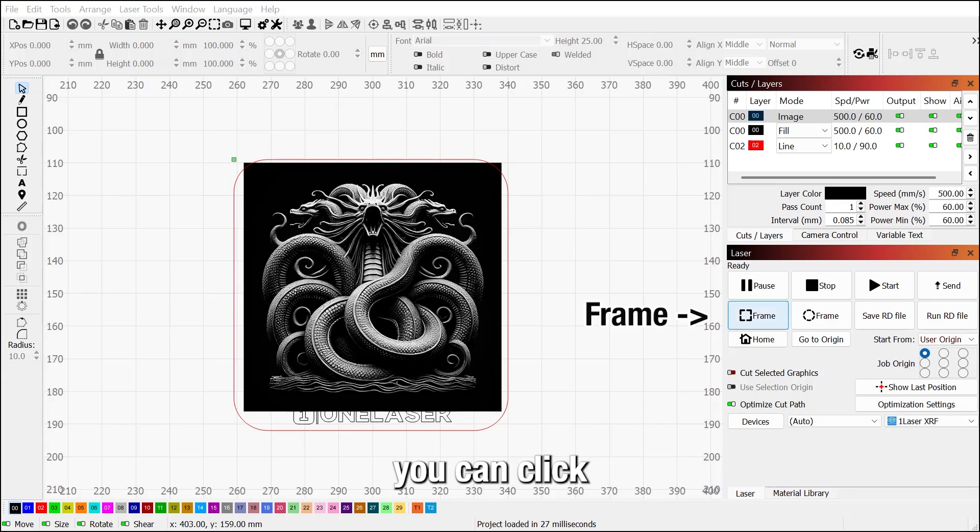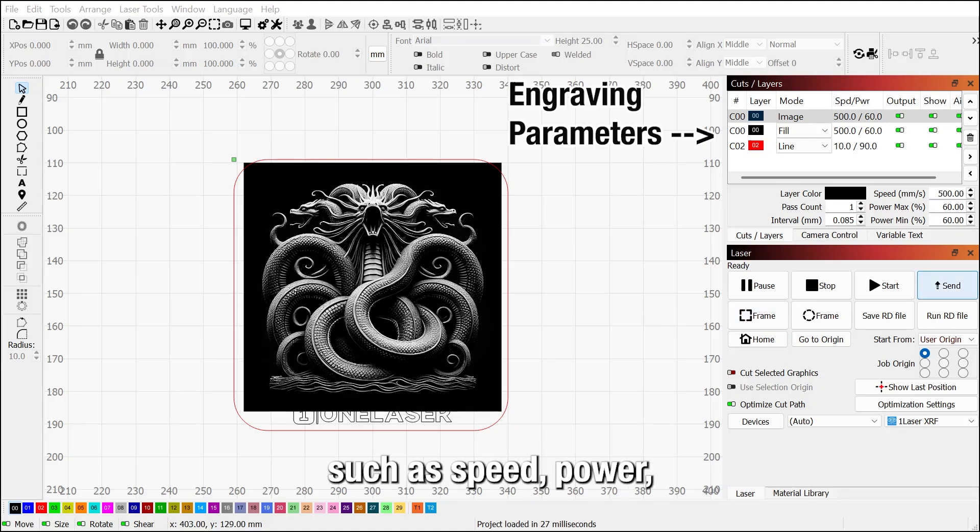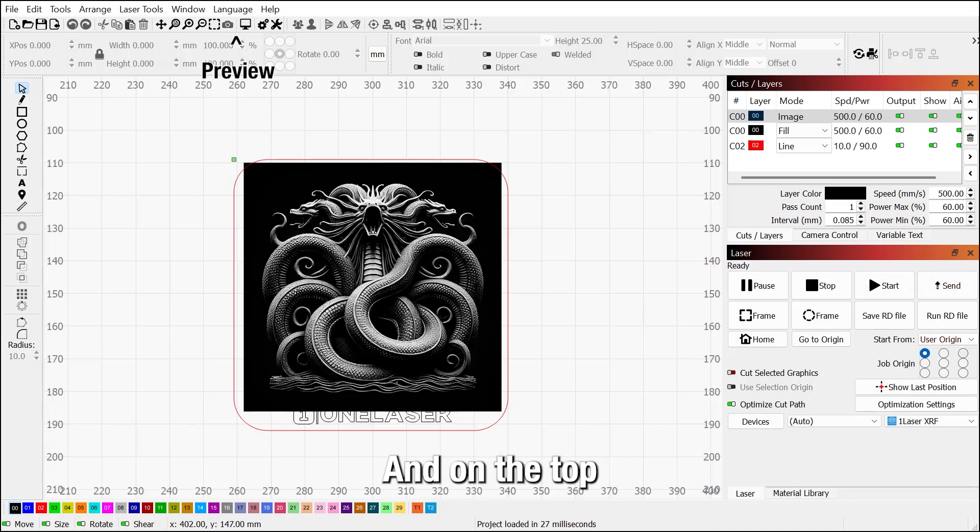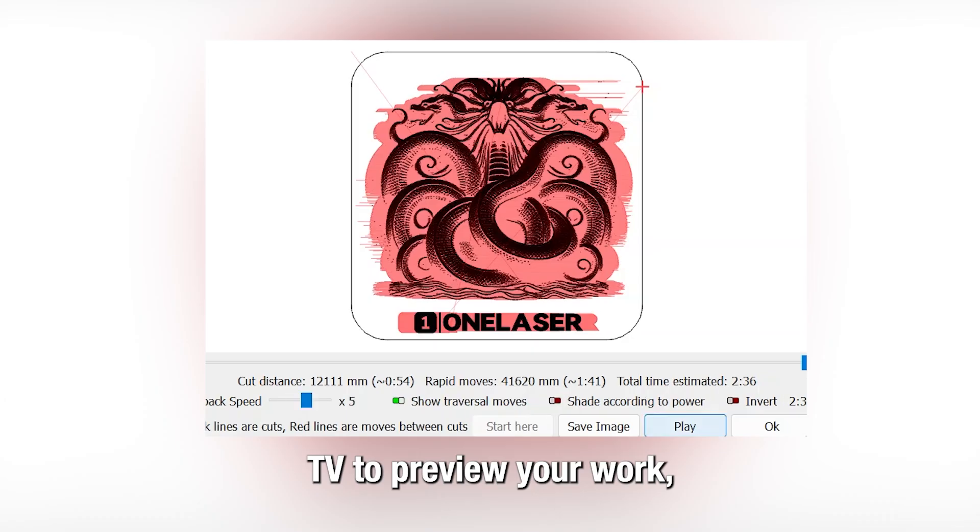Click on the Frame button. After importing your design, set your engraving parameters such as speed, power, and layer type in the layer editor on the top right. On the toolbar at the top of the screen, click the little TV icon to preview your work.